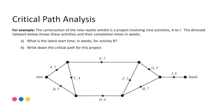Let's now look at an example where we can do all of that process together. The construction of the new reptile exhibit is a project involving nine activities A to I. The directed network below shows these activities and their completion time in weeks. Firstly, what is the latest start time in weeks for activity B? And secondly, write down the critical path for this project. In order to find the latest start time, remember that later start times refer to your backward scan, so we need to go through our whole process.